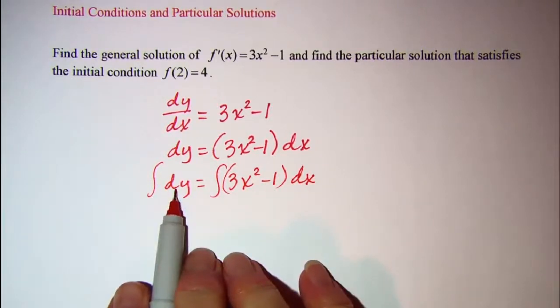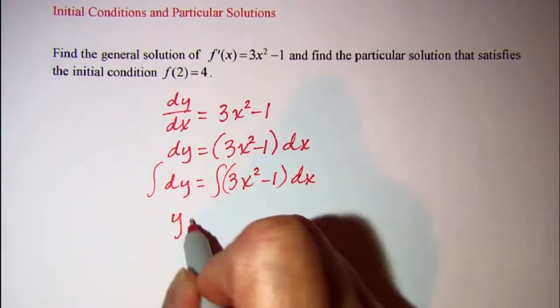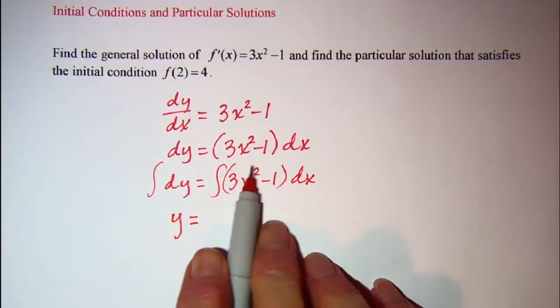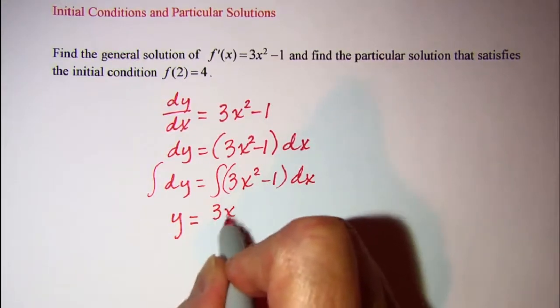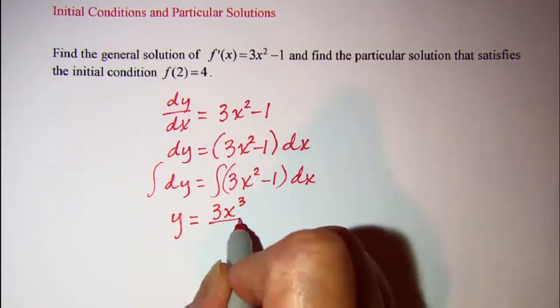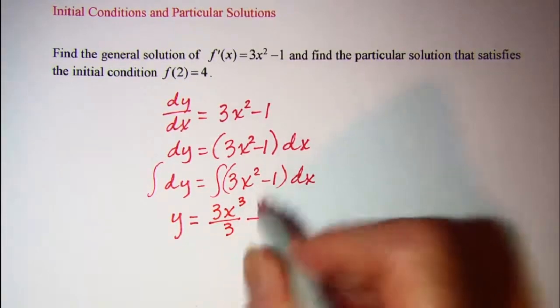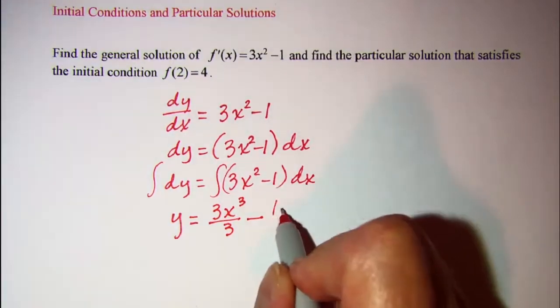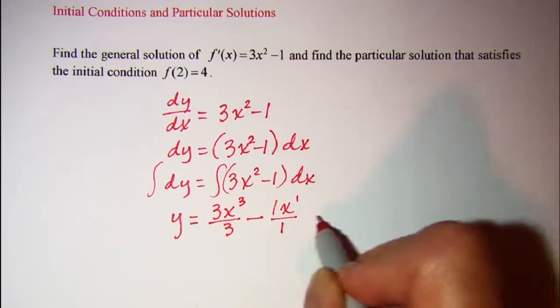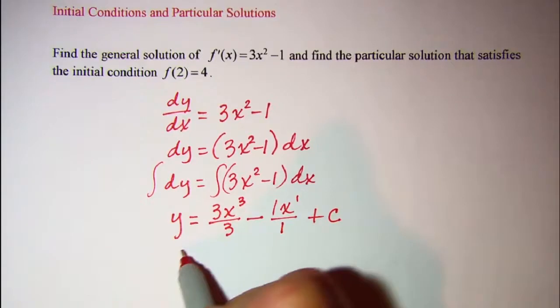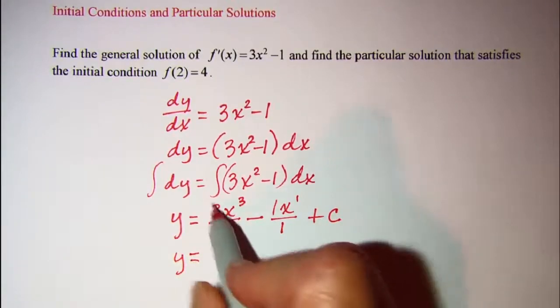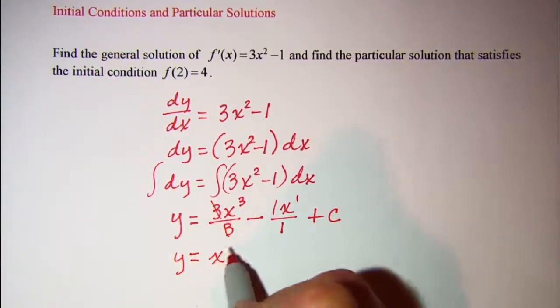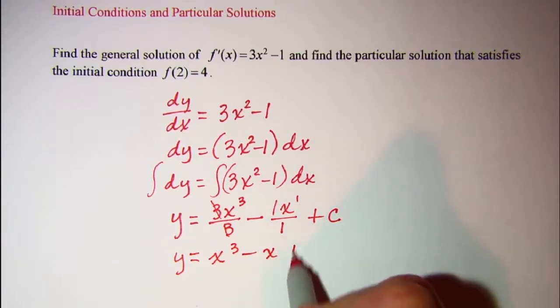The integral of dy is just y and we can increase the exponent by 1 and divide by the new exponent. So we have 3x³ divided by 3, and then minus, remember we can think of this as x to the 0, so we have 1x to the 1 divided by 1 and then plus our constant. So our general solution is y = x³ - x + c.